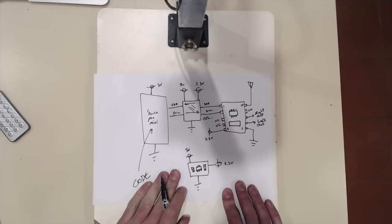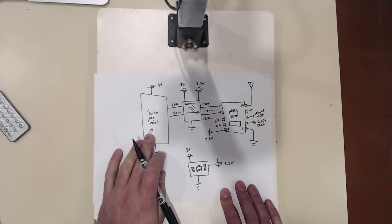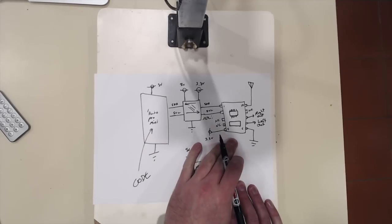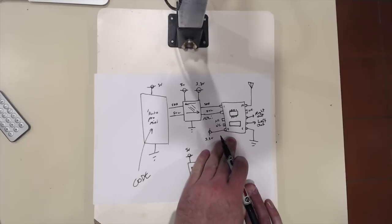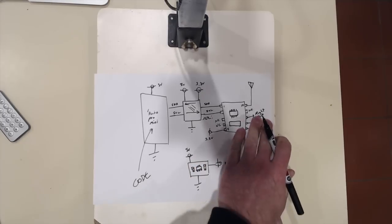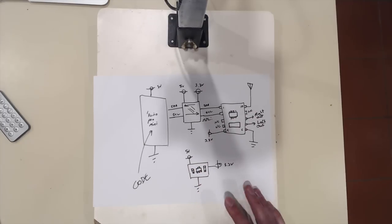Once you've got all that connected, and flash some code to this device, the radio should come out loud and clear through an amplifier connected to these outputs here.